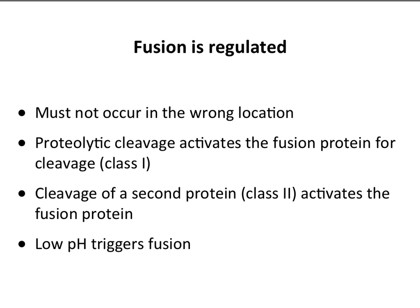Very similar mechanisms for all of these fusion peptides. The most important thing is really to hide the fusion peptides so they don't simply fuse with everything — fusion is always regulated, it can't occur in the wrong place. Evolution has selected for viruses that have mechanisms to regulate fusion, because if you do it in the wrong cell you can't replicate and you become extinct. Often proteolytic cleavage activates the fusion protein — we saw that with hemagglutinin for class 1. For class 2, cleavage of a second protein can activate it. And low pH in many cases also triggers fusion.